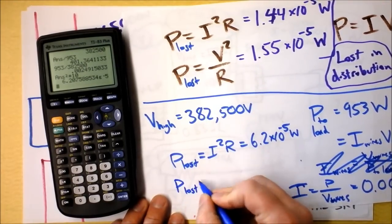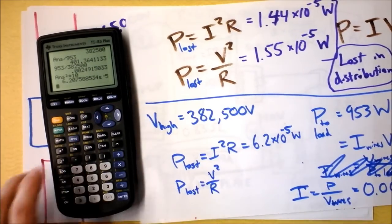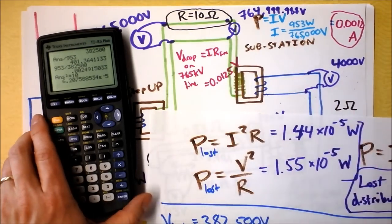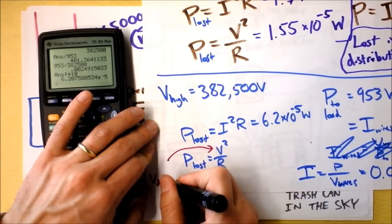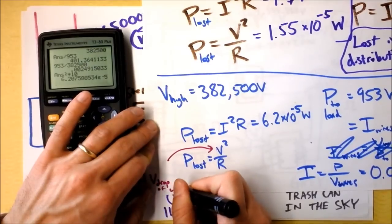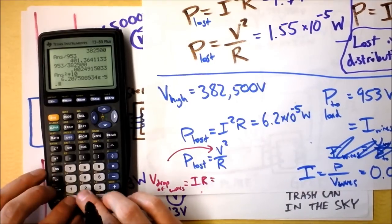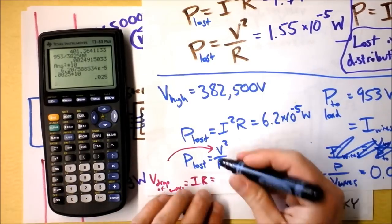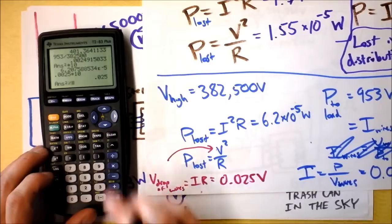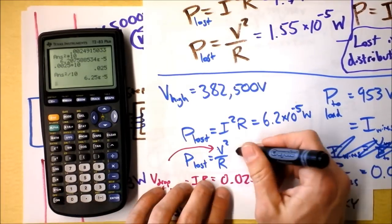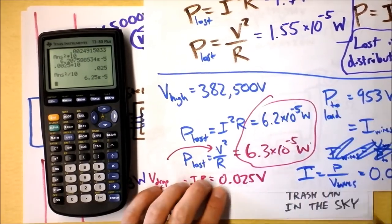But remember, I've got my naysayer who says that the power lost is voltage squared over R. But isn't that really big because this is a high voltage? That's not the voltage that we need to use. We need to find the voltage drop across this line. The voltage drop of the wires is the current through the wires times the resistance of the wires. The current is 0.0025 times the resistance of 10. That voltage drop is 0.025 volts. Now I can take that number and square it and divide it by the resistance. And I've gotten, as we promised, 6.3 times 10 to the negative fifth watts.